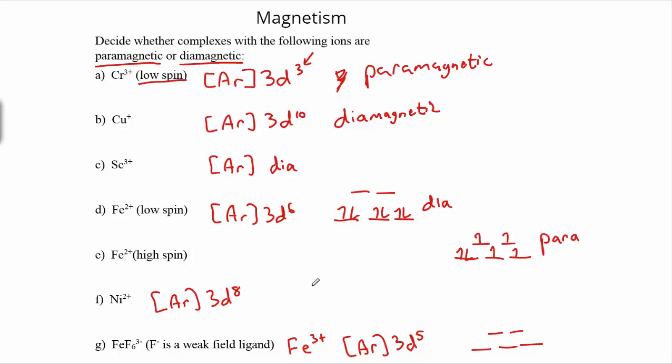Down here, we've got argon 3d⁸. So in 3d⁸, assuming an octahedral complex, which might be a bad assumption in some cases, but an assumption I'm going to make here. With 8, we're not specified otherwise, so I'll just fill it in.